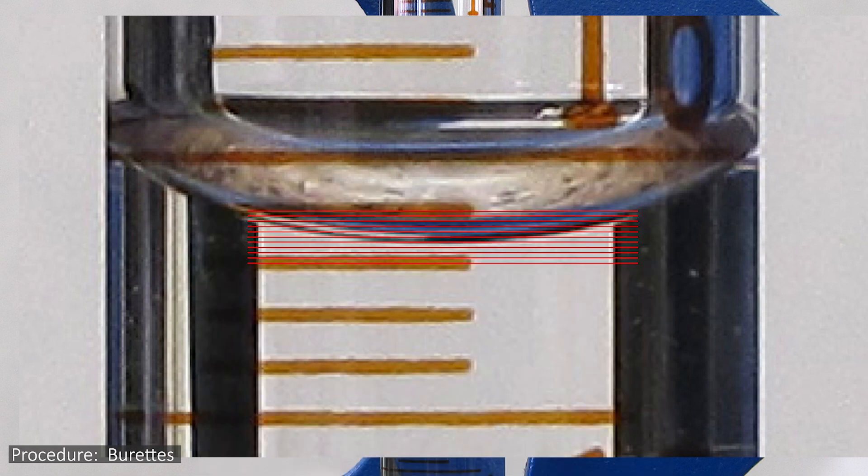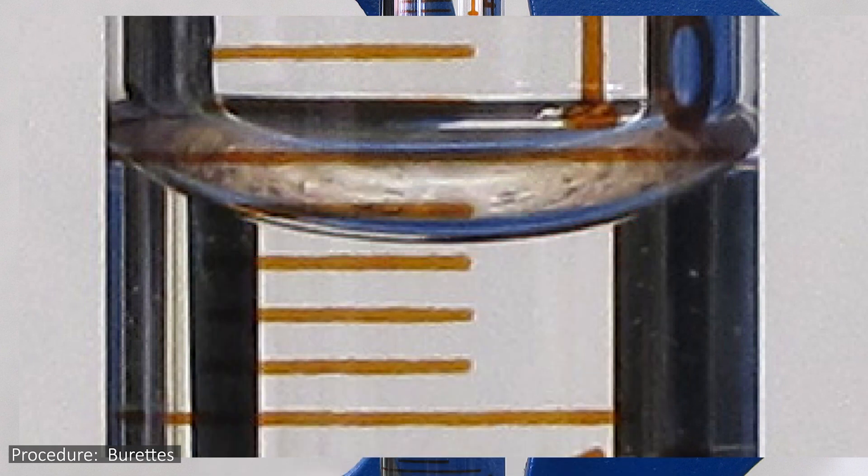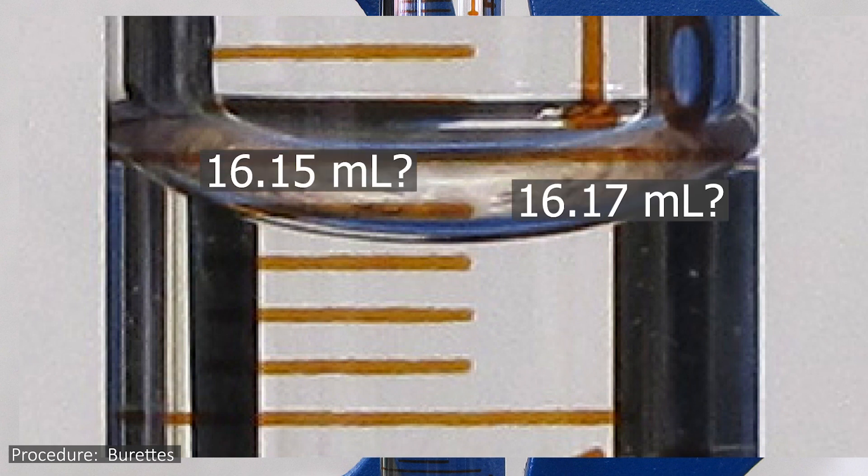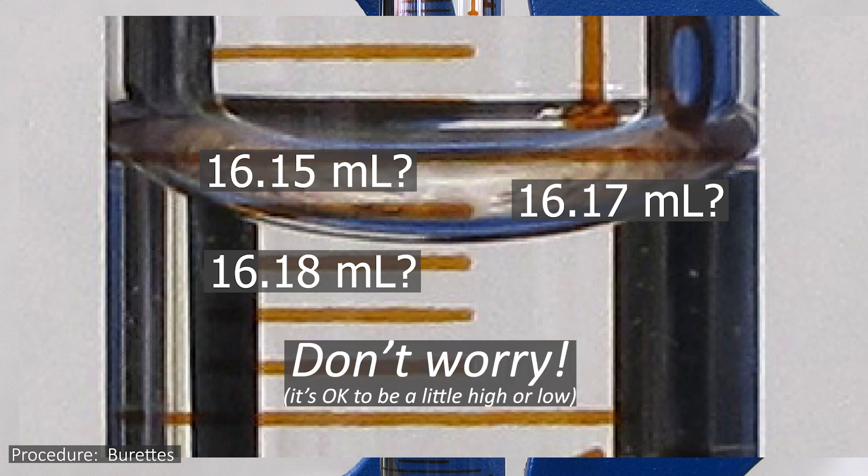Of course, when you go to do this yourself, you won't have any thin lines to help you out like the ones in this example, which does make it a little harder to figure out what that last digit is. Just estimate it as best you can, and don't worry too much whether your estimate is a little high or a little low. With some practice, you'll get good at this in no time.